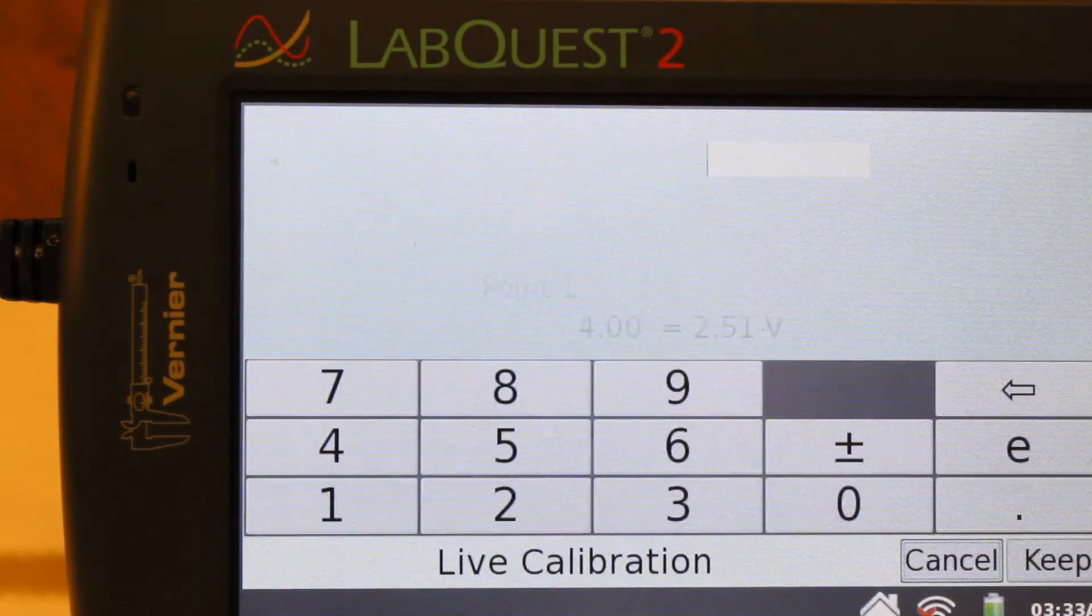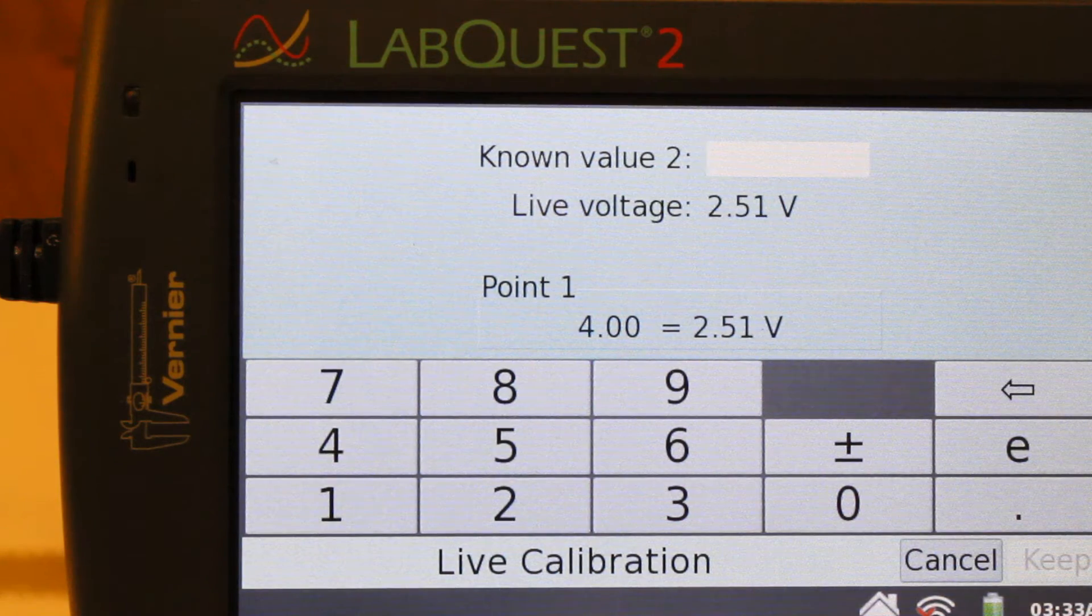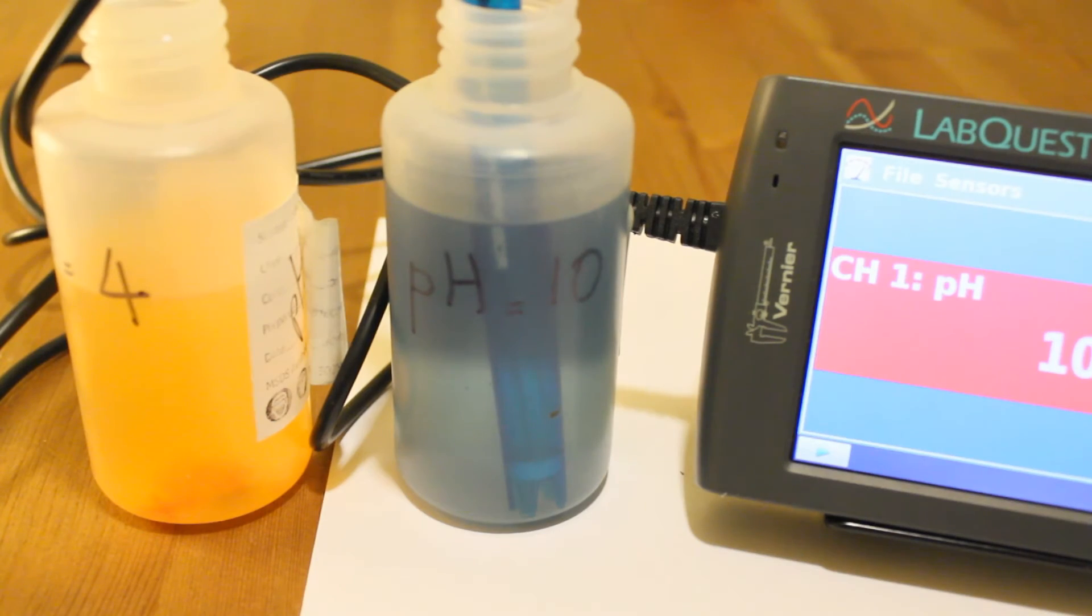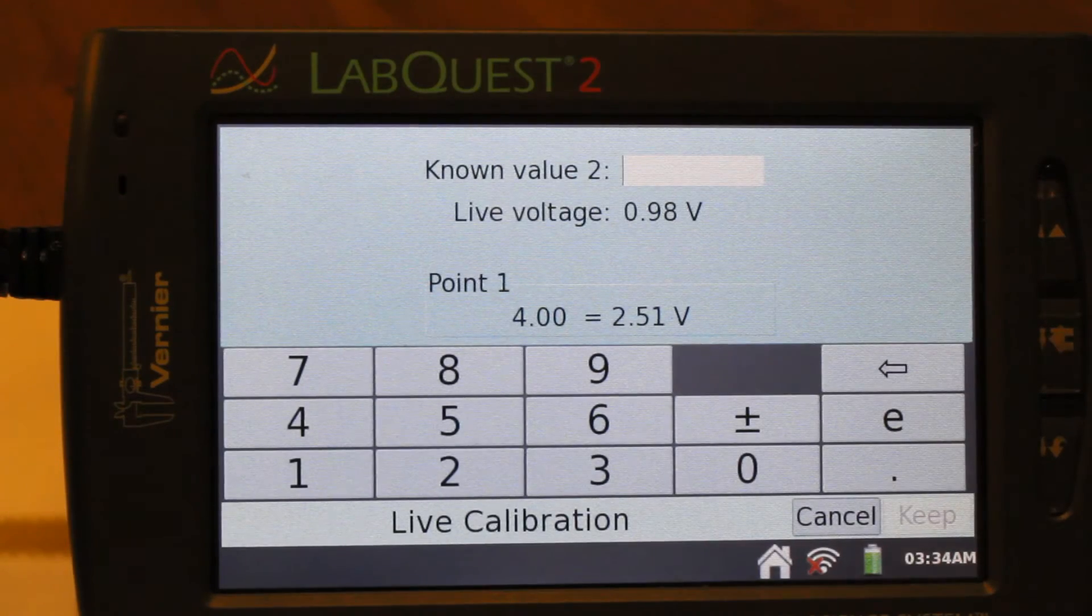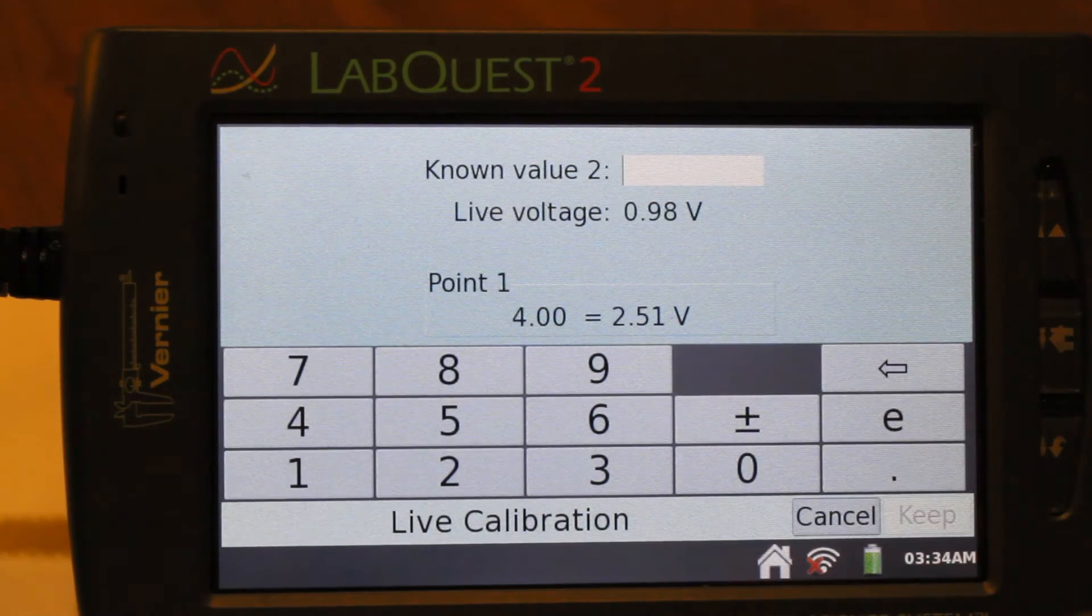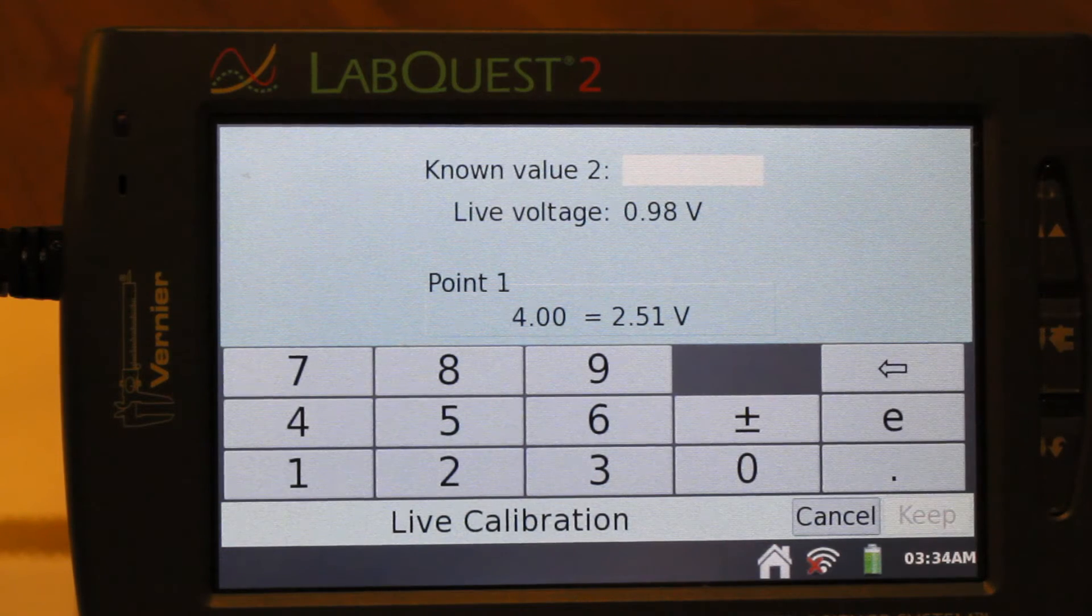After this, you should remove the pH meter from the pH 4 solution and immerse it in the buffer of pH 10. When the live voltage stabilizes, enter known value 2, in this case the value is 10.